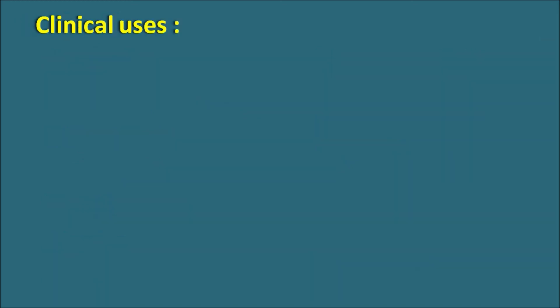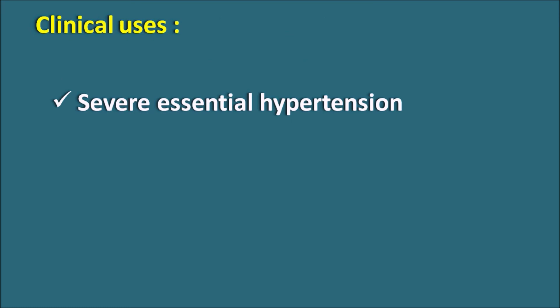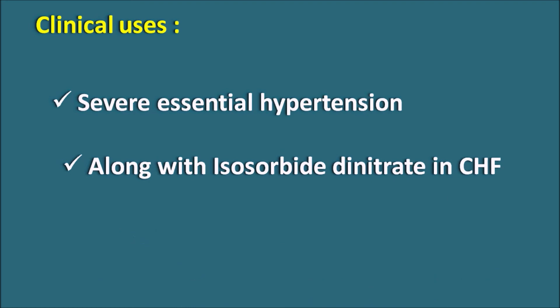Regarding clinical uses, hydralazine is not used as a first-line drug in treatment of hypertension. It is particularly used for treatment of severe essential hypertension, and even in this condition it is not first-line. However, when other drugs are not effective, hydralazine can be used for emergency treatment of hypertension. Another indication is that this drug can be given along with isosorbide dinitrate in treatment of congestive heart failure. Organic nitrates like isosorbide dinitrate produce dilatation of veins, whereas hydralazine produces arteriolar dilatation. This combination can reduce both afterload and preload, thereby reducing cardiac work. This combination is used only in select patients.